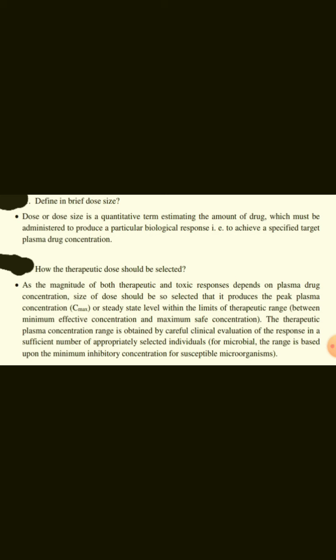How should the therapeutic dose be selected? As the magnitude of both therapeutic and toxic responses depends on plasma drug concentration, the size of dose should be selected such that it produces the peak plasma concentration or steady-state level within the limits of the therapeutic range. The therapeutic plasma concentration range is obtained by careful clinical evaluation of the response in a sufficient number of appropriately selected individuals in clinical trials.